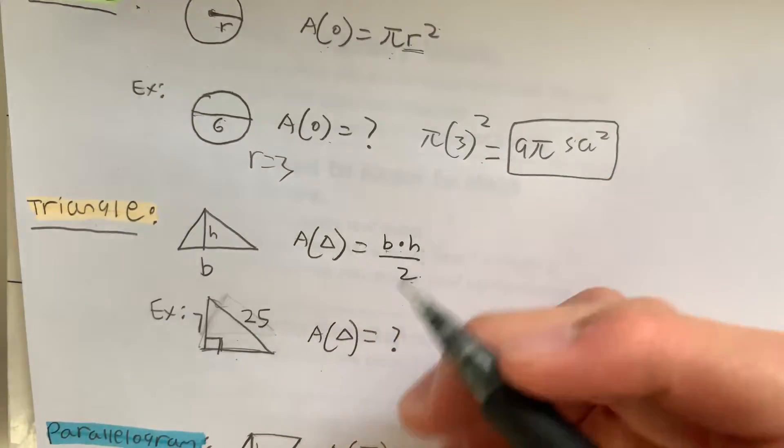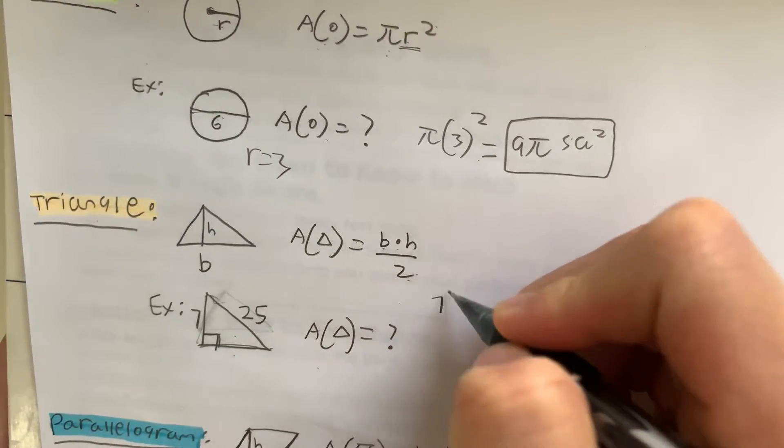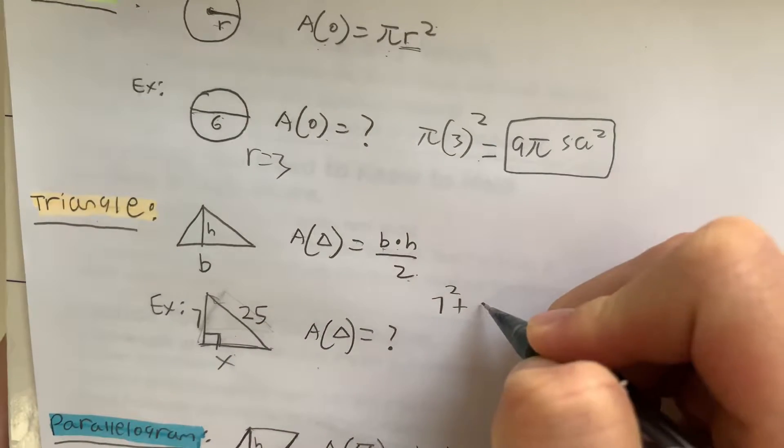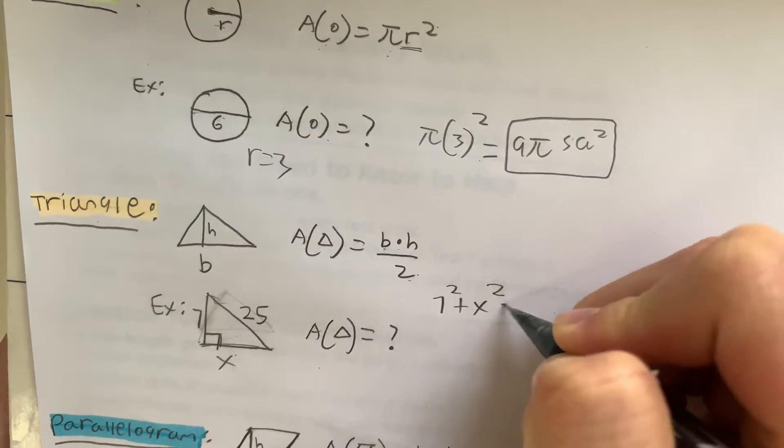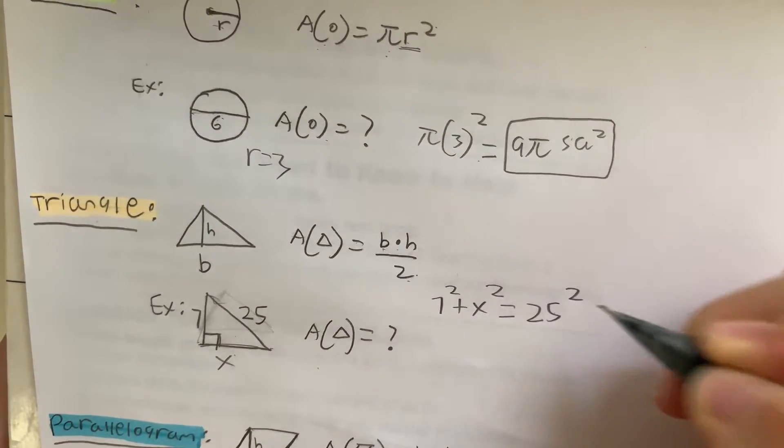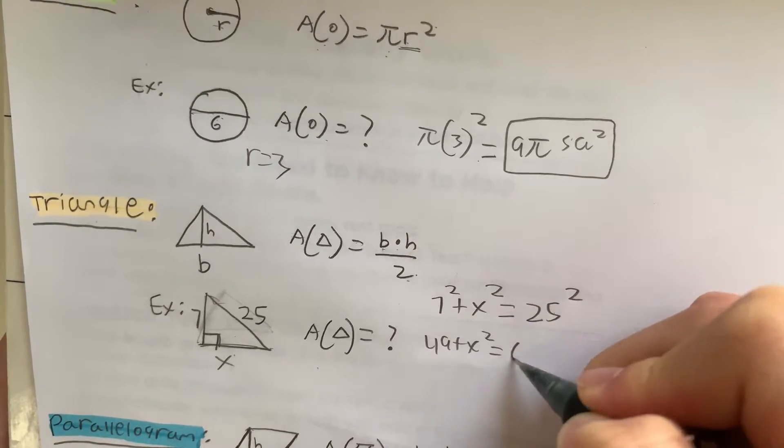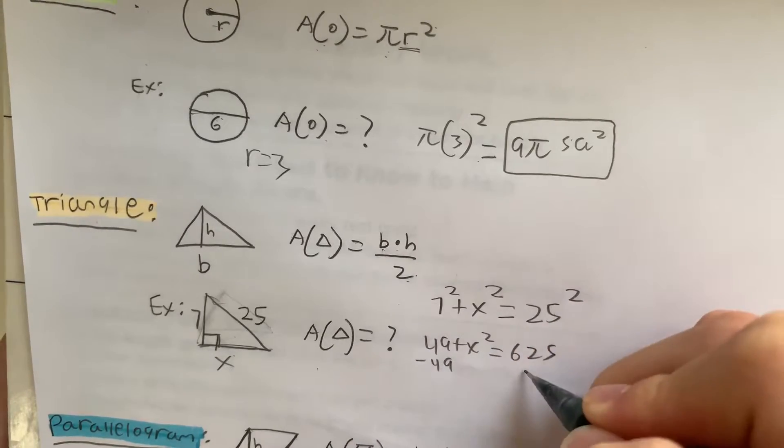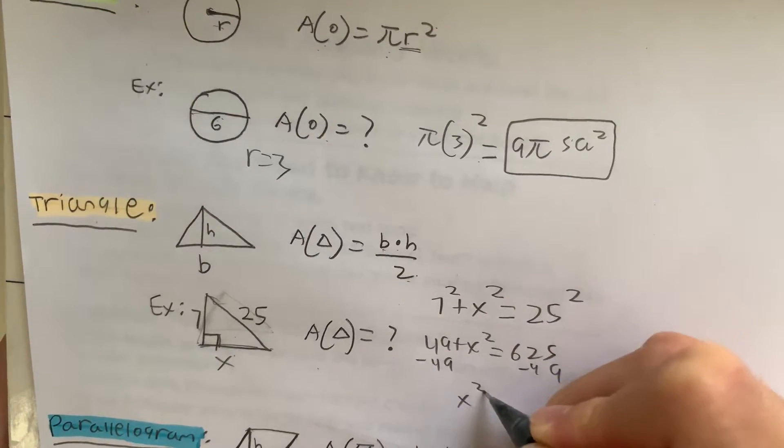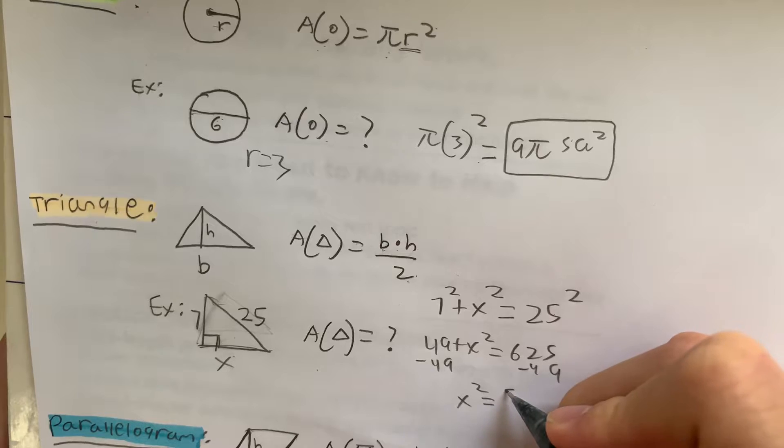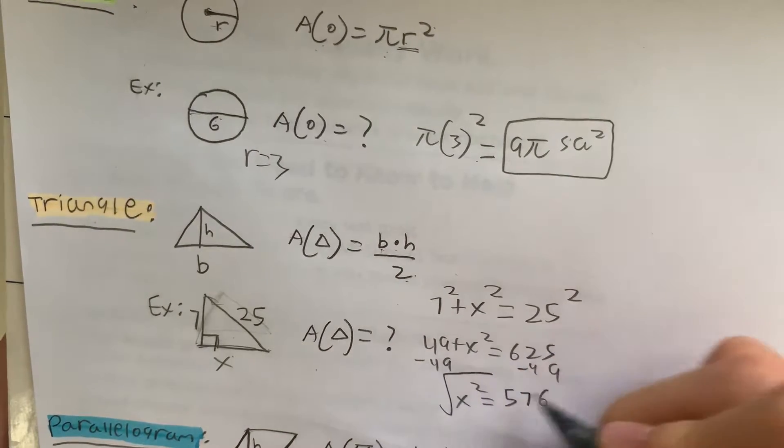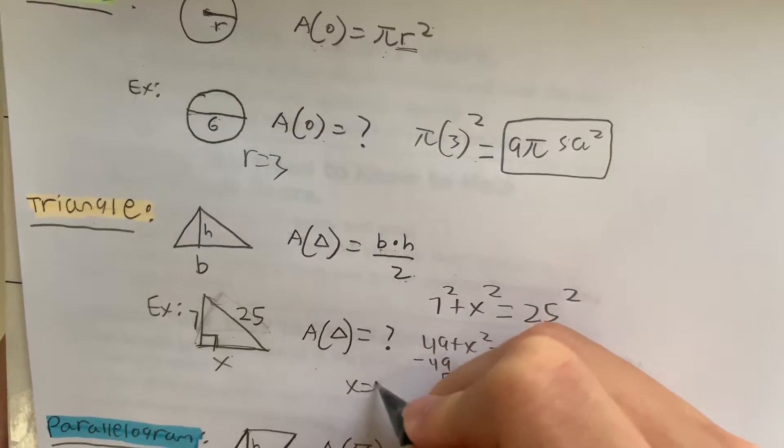7 squared plus, let's call this x, plus x squared equals 25 squared. So 49 plus x squared equals 625. Subtract 49 on both sides. x squared equals 576. Square root both sides. That gives us x equals 24. So the side length of this is 24.